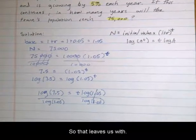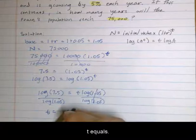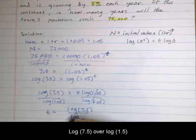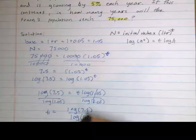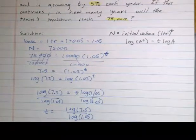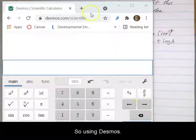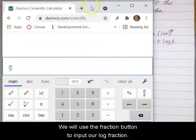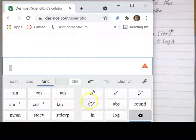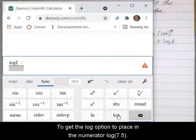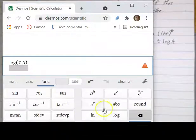That leaves us with t equals log of 7.5 over log of 1.05, which we can find on the calculator. Using Desmos, we'll use the fraction button to input our log fraction, go over to the function tab to get the log option. In the numerator we'll have log of 7.5, and in the denominator log of 1.05, and close parentheses, hit enter.